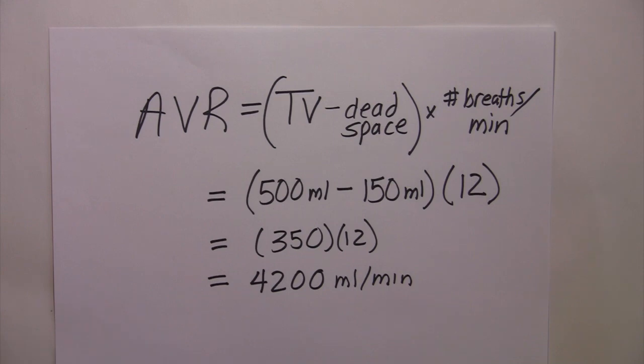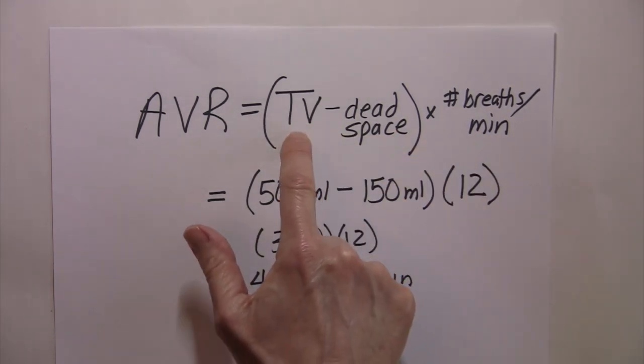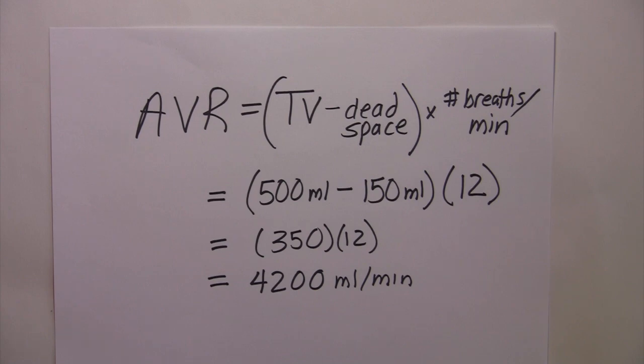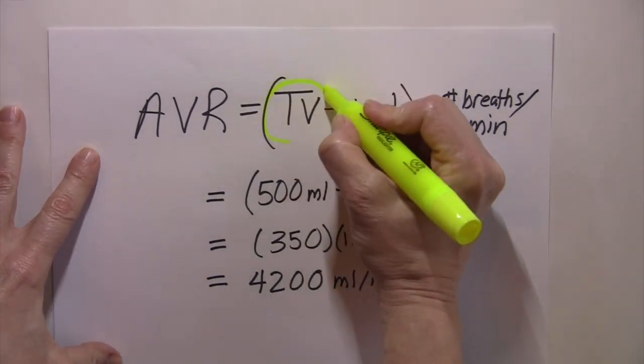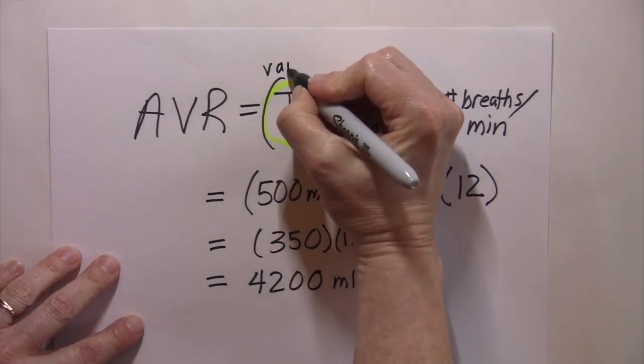So one last observation I want to make on this equation before we go, and that is let's take a look at the components of the equation. Tidal volume. Is that a constant or a variable number? What do you think? Could we change the tidal volume? Could we make it bigger or smaller? So the amount of air that we're taking in with each breath, that tidal volume, that could vary. Right? So I'm going to call this a variable.